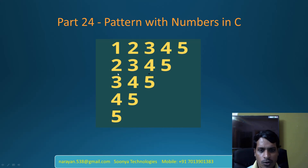In the second row: 2, 3, 4, 5. In the third row: 3, 4, 5. In the fourth row: 4, 5. And in the fifth row: 5.